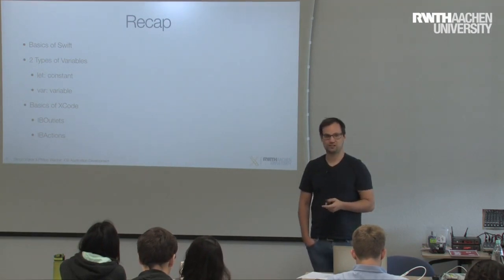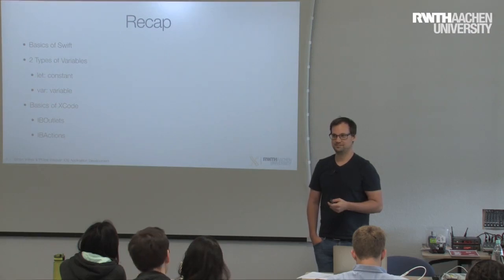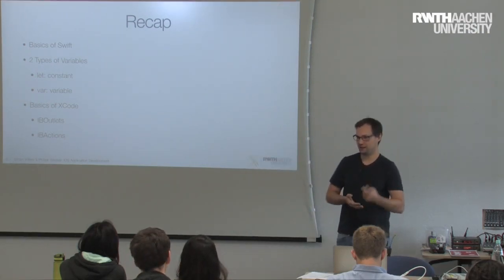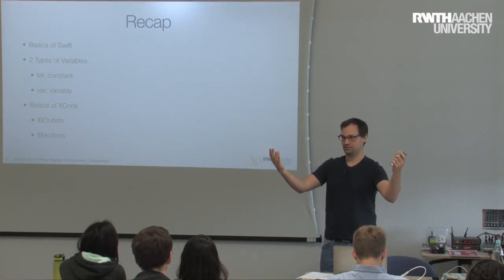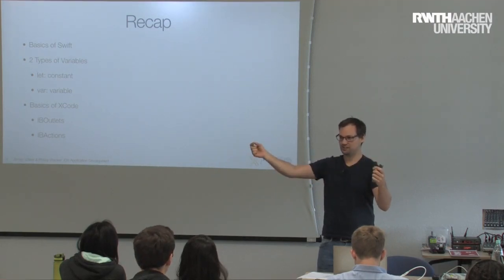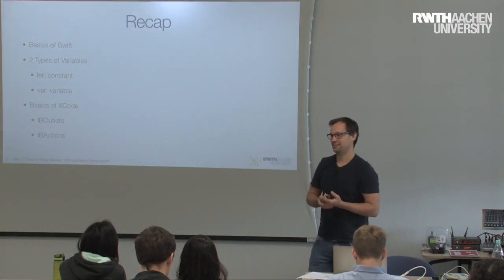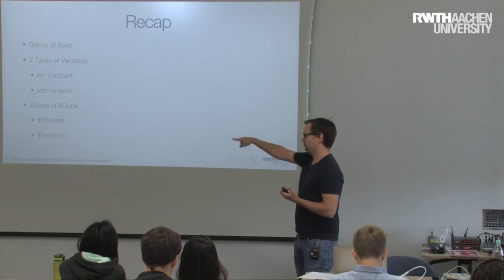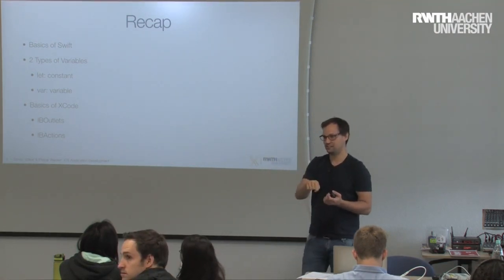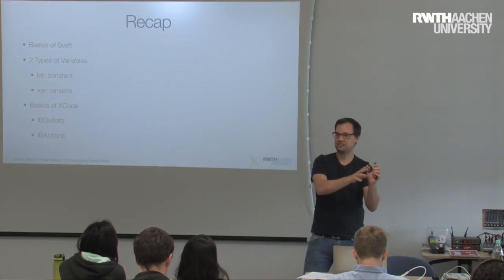Can somebody remember what an IB outlet was and which direction it goes? You have the interface here and the code here. One way could be that the interface triggers something in the code, and the other way the code can access information from the interface. The action is basically: you press a button in the interface and it triggers a function in your code — the action is the connection from the interface to the code.